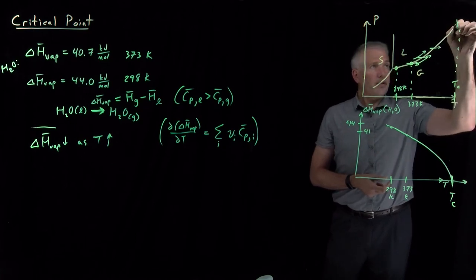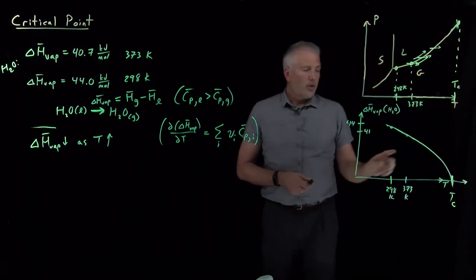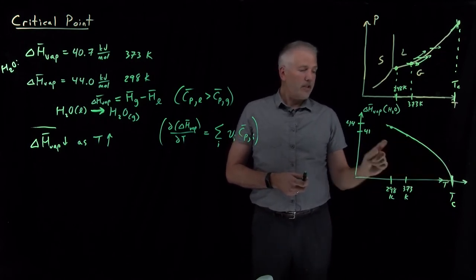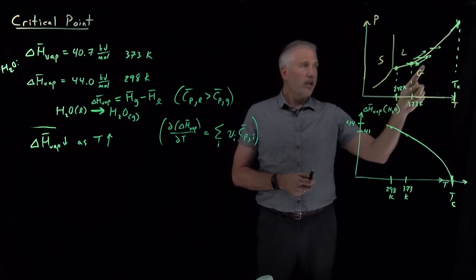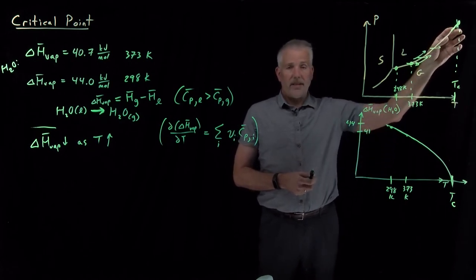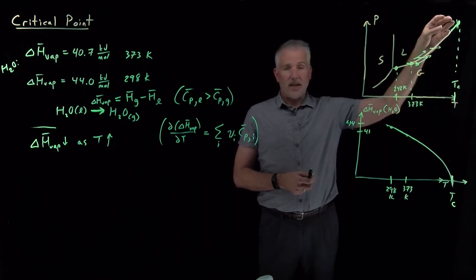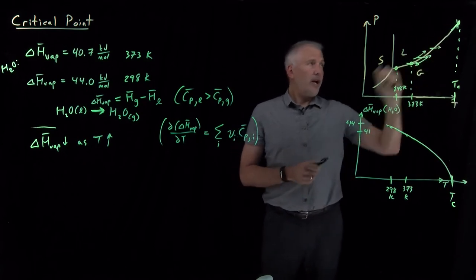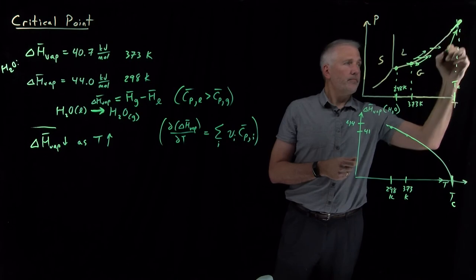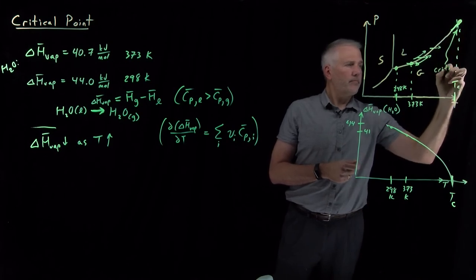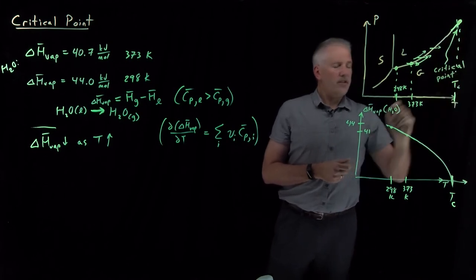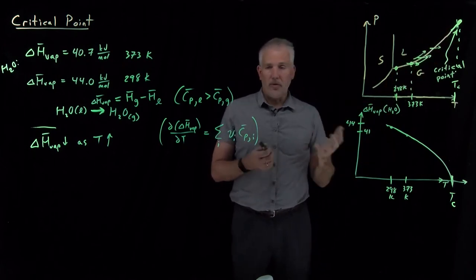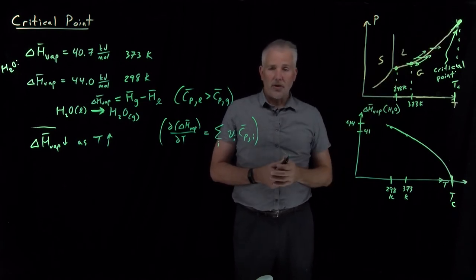At the point where the enthalpy of vaporization becomes zero — which we call the critical point — there is no difference in enthalpy between the gas and the liquid because a dense hot gas is indistinguishable from a dense hot liquid. We've compressed the gas to the point where it's liquid-like, and there's no difference between the two.